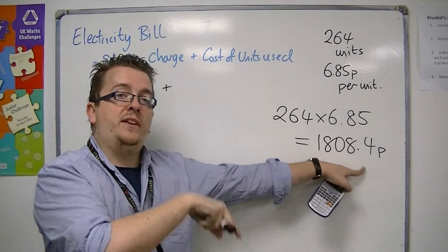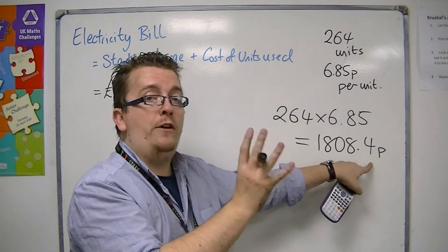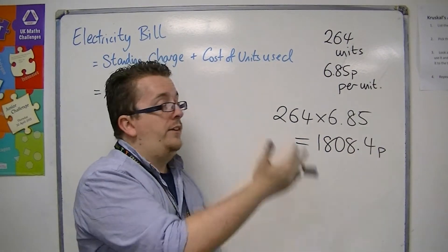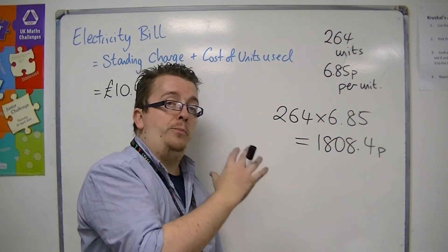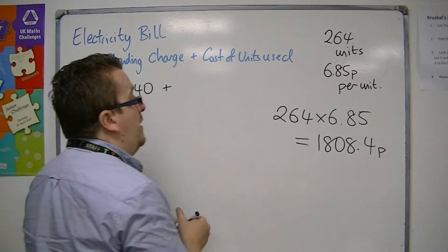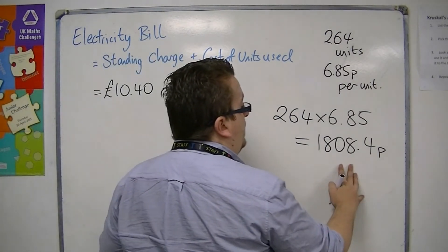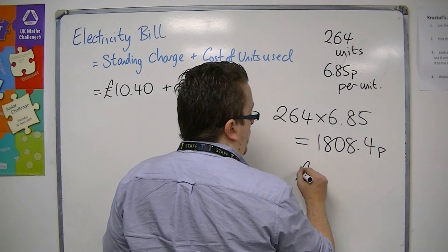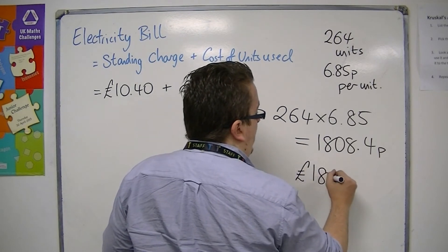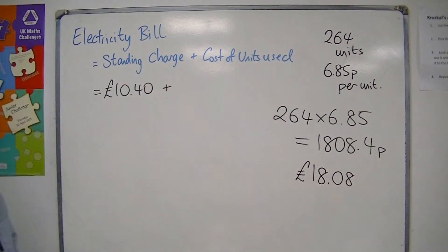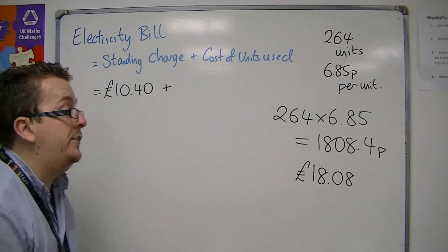In these cases the money is rounded down to the nearest penny. So that would be 1808 pence, which is £18.08 in pounds. That 0.4 of a penny is ignored.